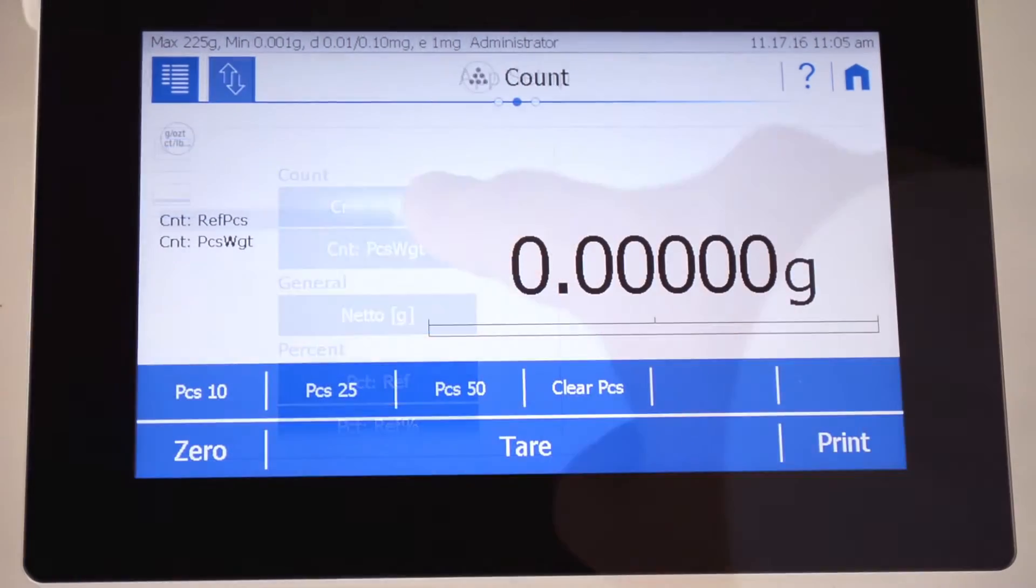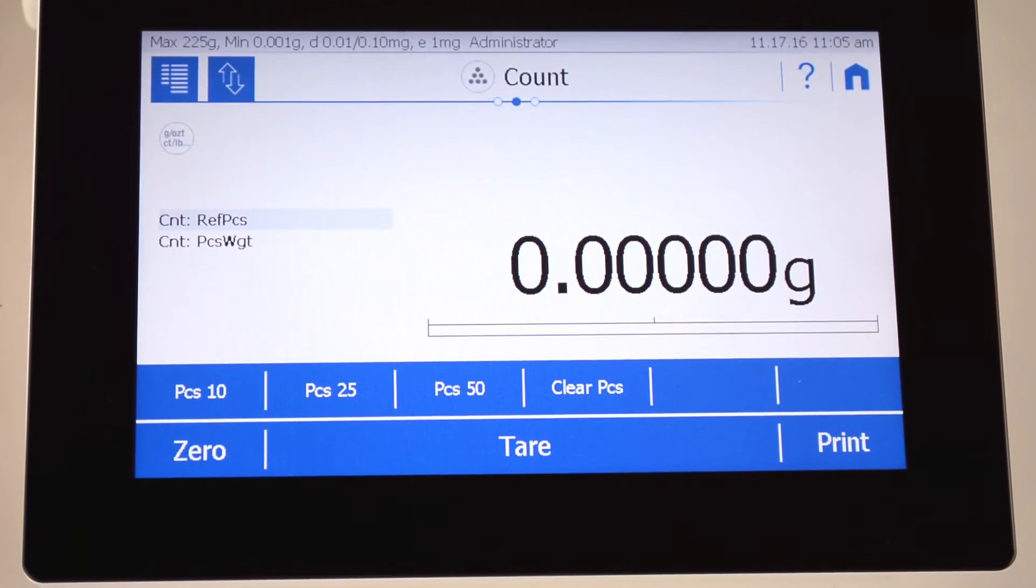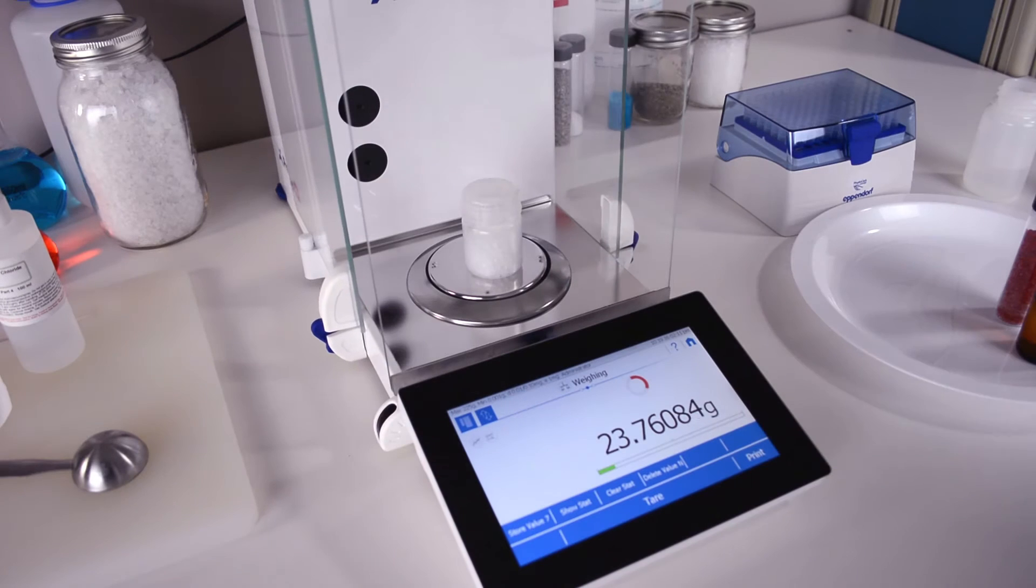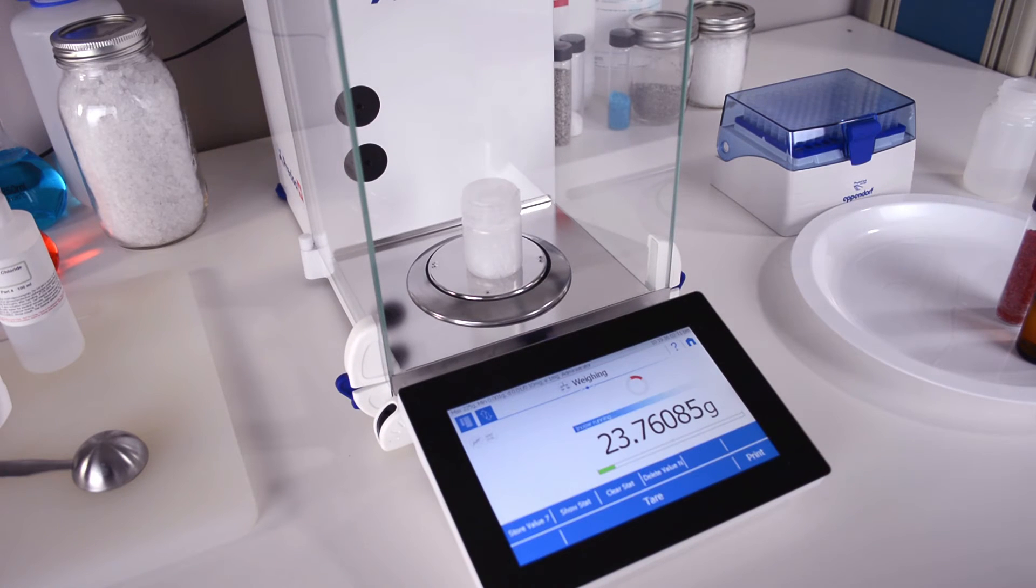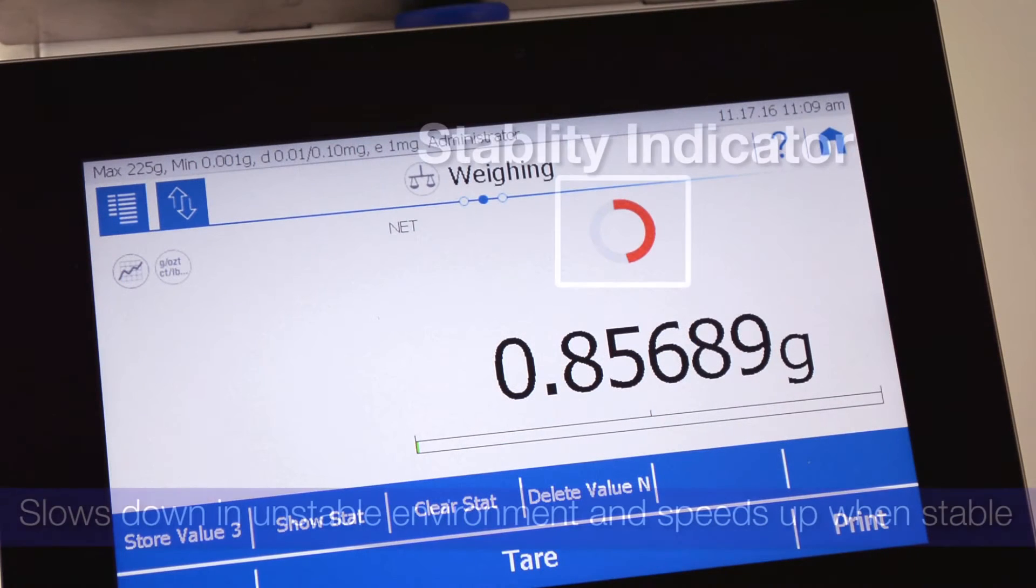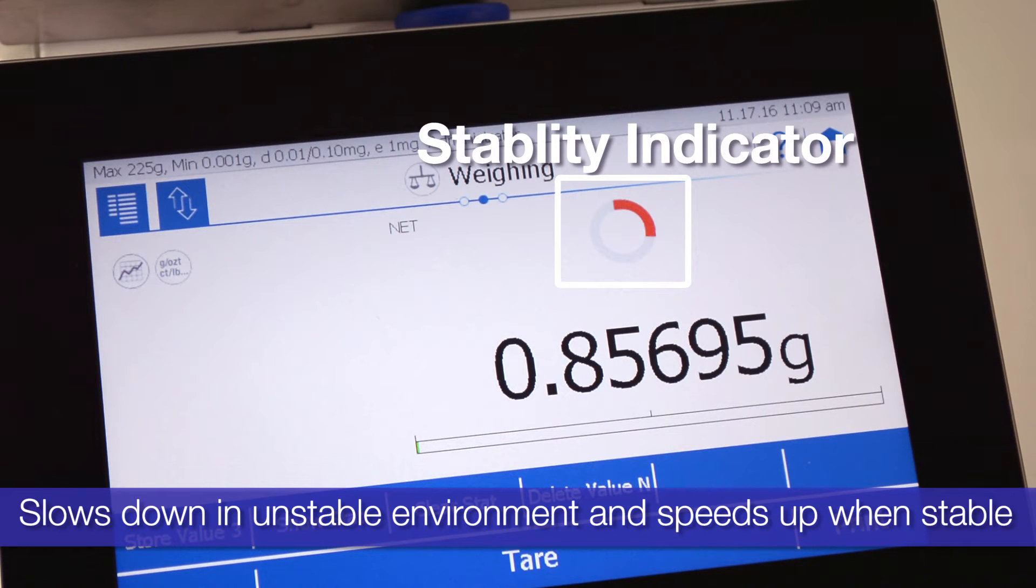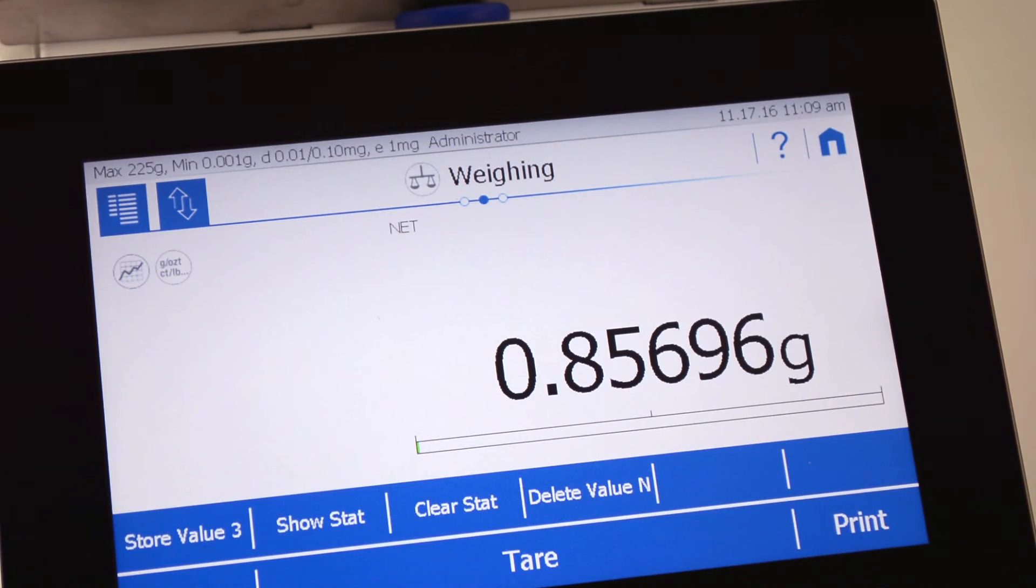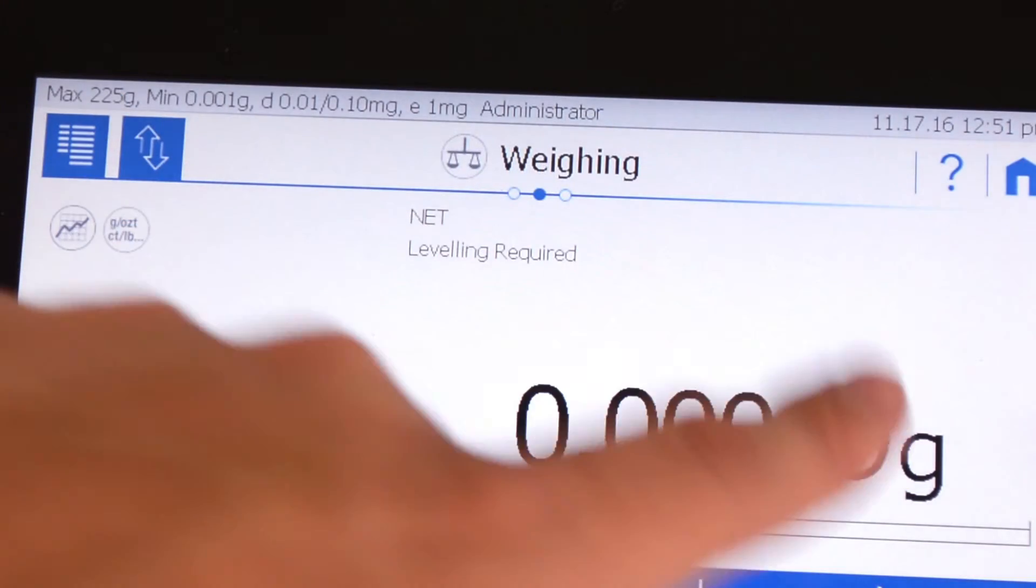The H series is especially designed to notify you of issues that can affect the accuracy of your results with its optical stability indicator and predictor. The balance detects anomalies in the ambient environment and speeds up or slows down to compensate. The balance will also notify you when it needs to be calibrated, linearized, or leveled.